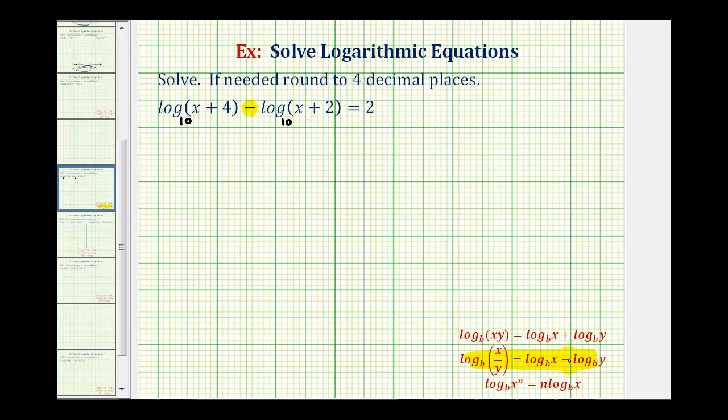Because we have a difference, we can combine them into a single log by taking the quotient of the number parts of the logarithms.